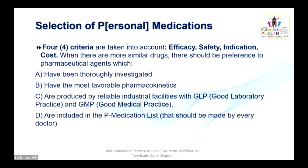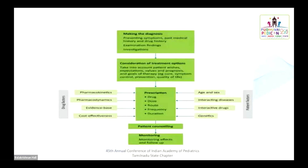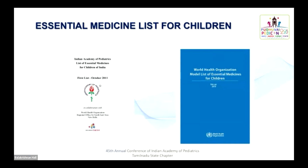What is P medication list? This model list of essential medicine for children was derived by the World Health Organization, and totally so far seven lists have been produced. The latest update was done in 2019. From this list, all medicines should be used for children — that is called rational prescription. At the Indian level, the Indian Academy of Pediatrics has adopted from the WHO list, but it still needs to be updated as the first list was produced in 2011.